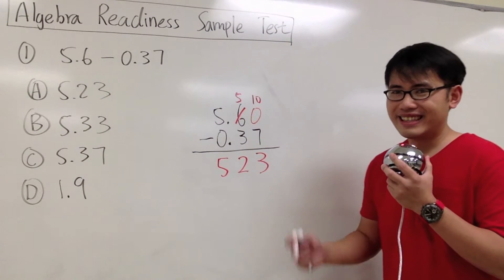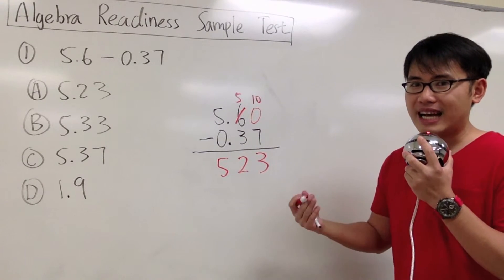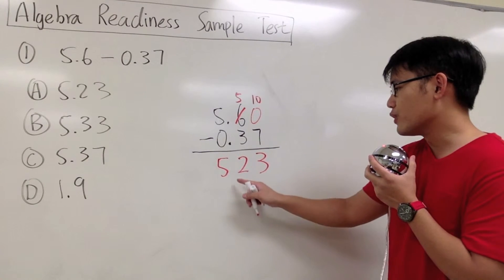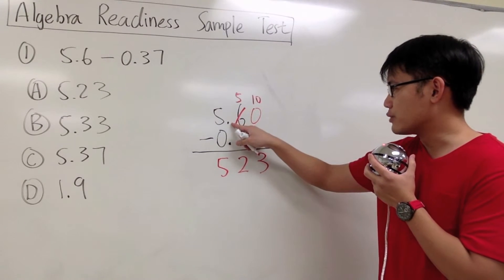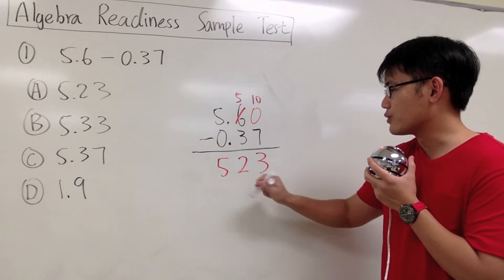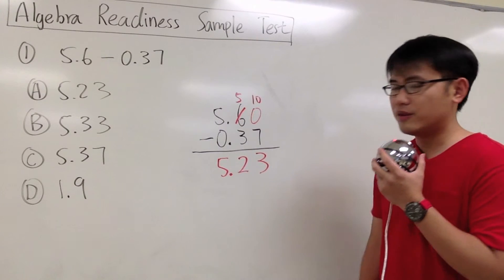We are almost done. Whenever we subtract or when we add, we always line up with the decimal point, also for the answer. You see the decimal point is right here, it's right here. So we also have to put a decimal point right here for the answer.